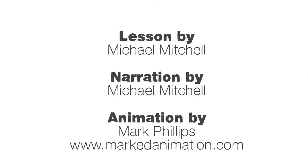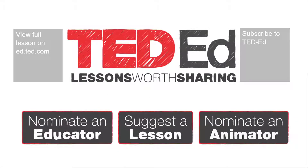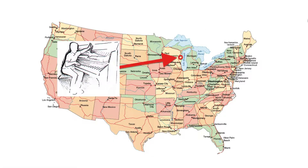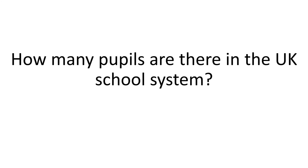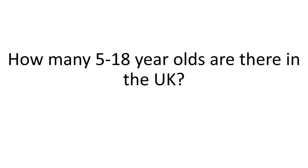I'd like to thank Michael Mitchell and Mark Phillips of TED Education for that very helpful animation. Well, piano tuners in Chicago are all very well, but what about estimating something a little bit closer to home? Say, the number of pupils there are in the UK school system. Once again, we've got a very broad, general-sounding question. Let's reformulate it so we're talking about individuals of a particular age — how many 5 to 18-year-olds there are in the UK, given that virtually all of this population are in full-time education.